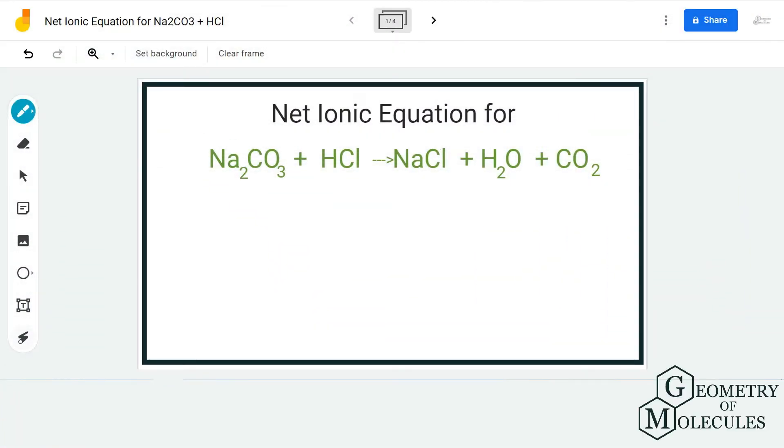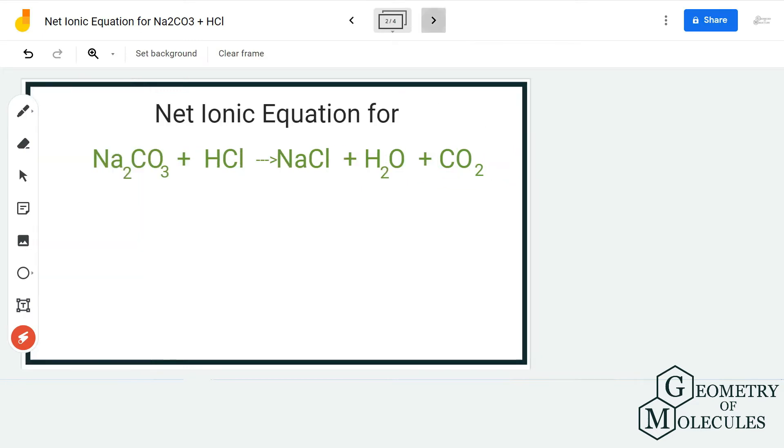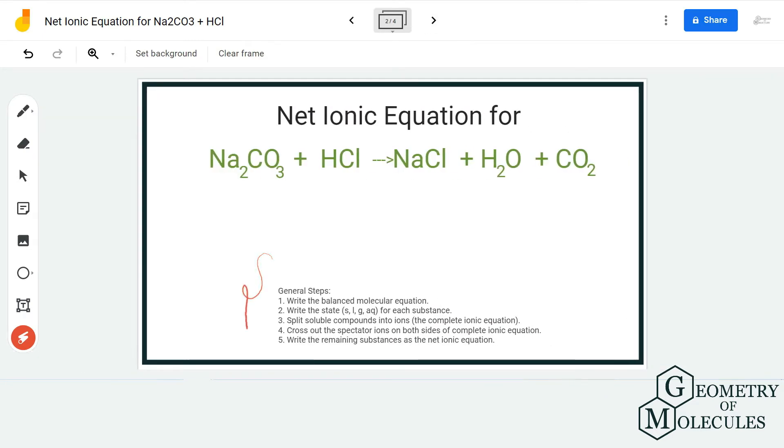Hi guys, welcome back to our channel. In today's video, we're going to help you find the net ionic equation for this reaction: Na₂CO₃ + HCl on the reactant side, NaCl, H₂O, and CO₂ on the product side. There are a couple of general rules to follow to find this net ionic equation.